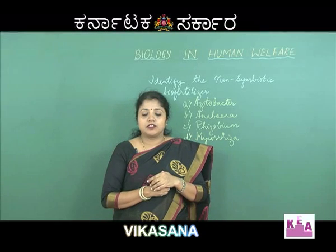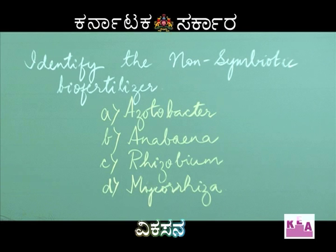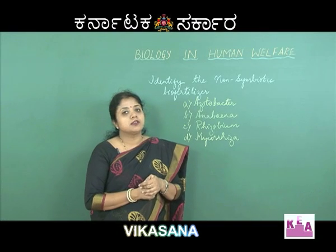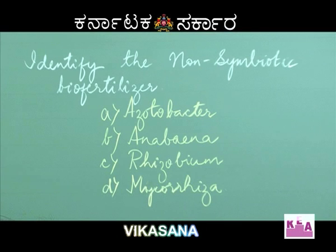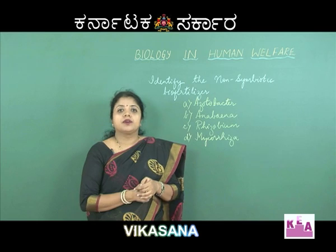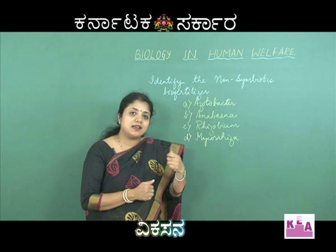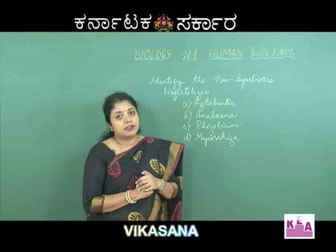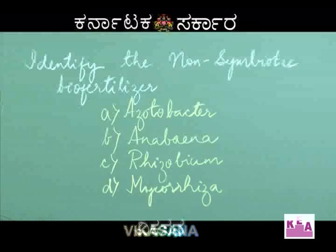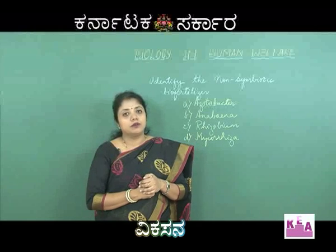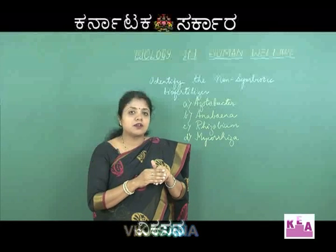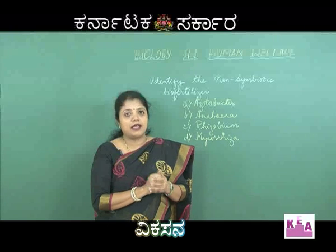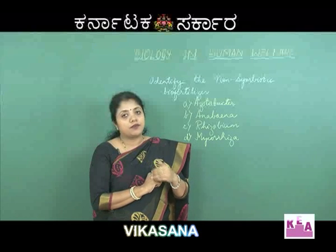Azotobacter is a free-living bacteria with the ability to fix nitrogen into the soil. Anabaena is a cyanobacteria associated with the water fern Azolla and helps in nitrogen fixation. Rhizobium is a bacteria associated with the roots of plants — it forms root nodules and inside the root tissue, it fixes nitrogen. Mycorrhiza are a group of fungi found associated with the roots of angiosperms, growing on the surface or even entering the root tissue to help the plant absorb nutrients.